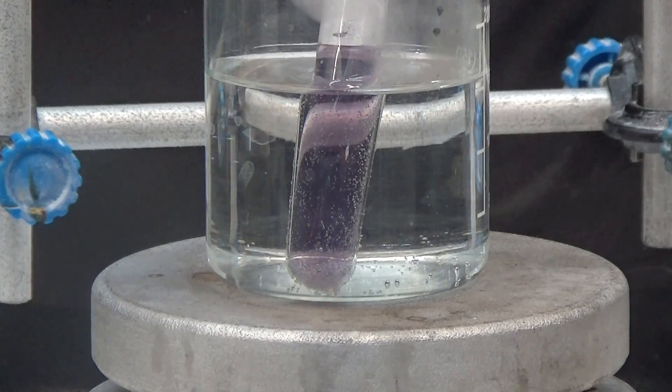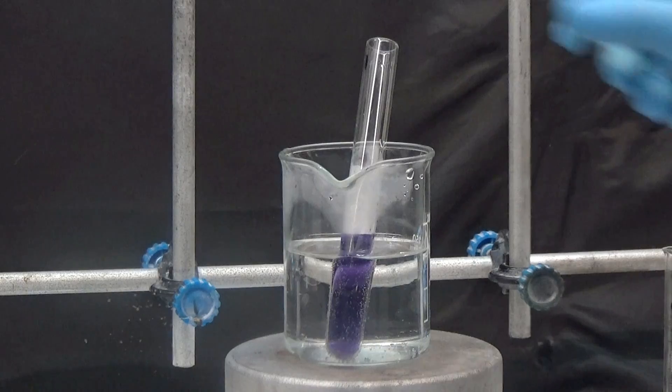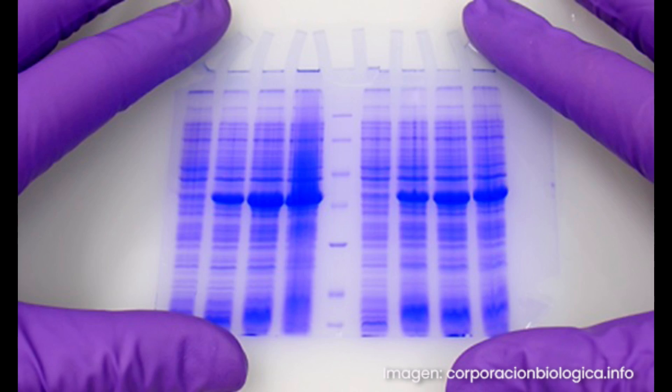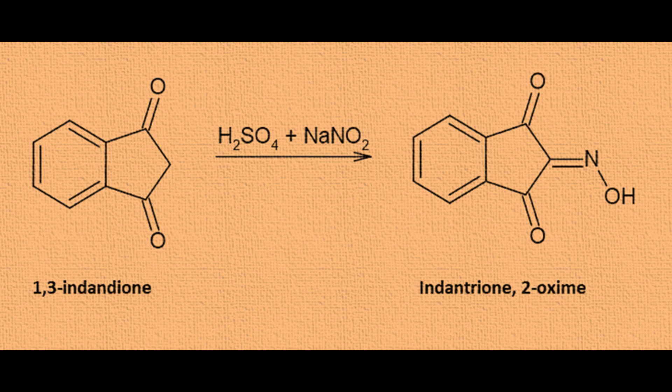The reaction is positive when ninhydrin comes into contact with an amino acid solution, and the color varies between blue and intense violet. In electrophoresis and chromatography, amino acid separation bands can be visualized using ninhydrin. Two reactions are used to obtain ninhydrin.